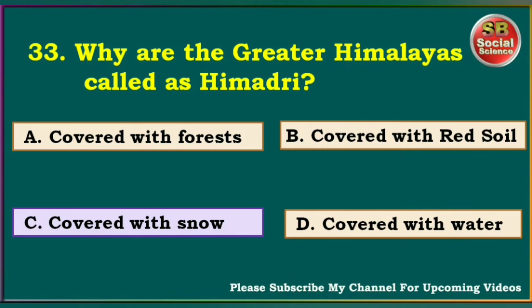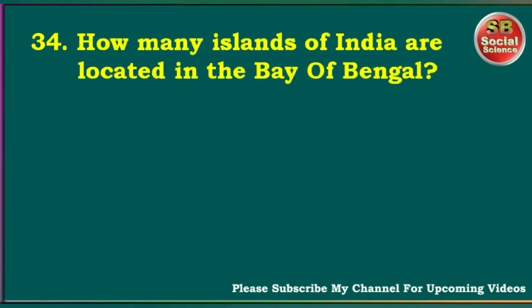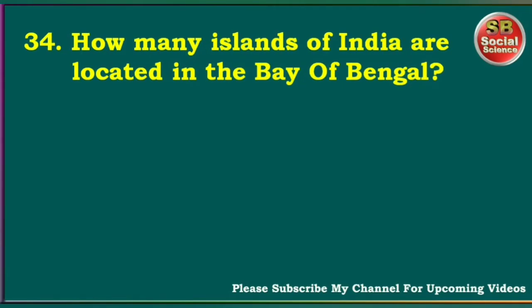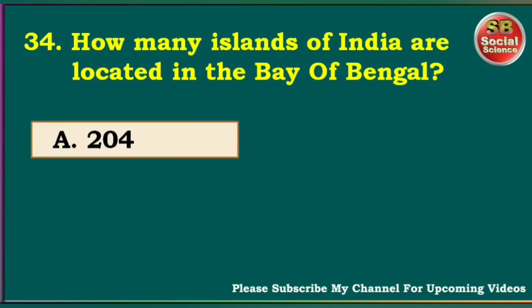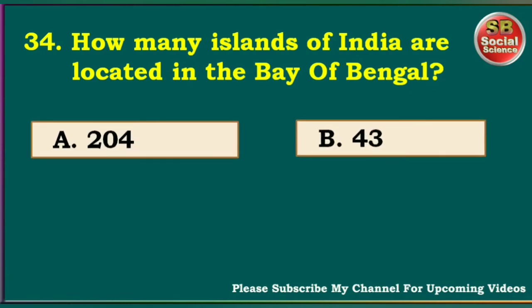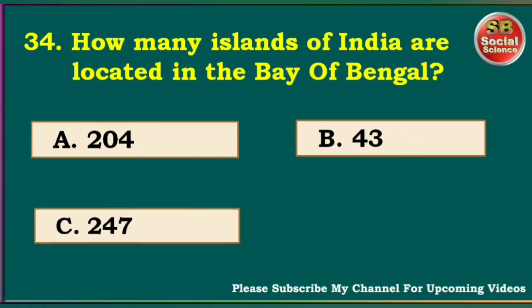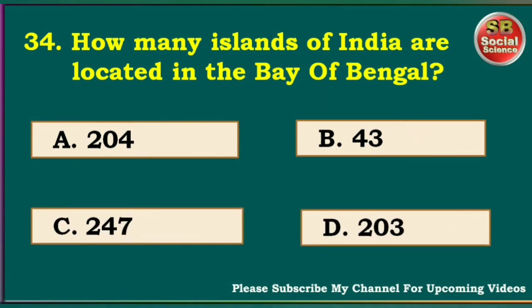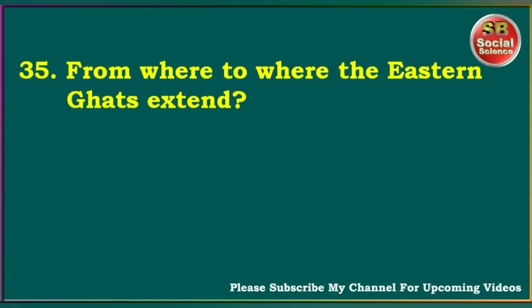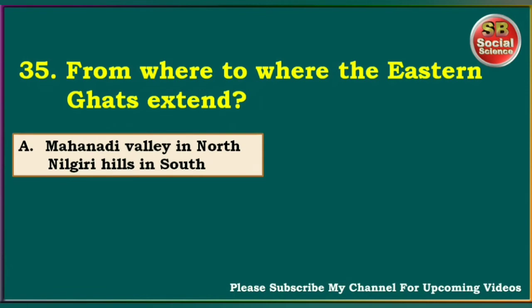How many islands of India are located in the Bay of Bengal? 204, 43, 247, 203. The answer is 204. From where to where does the Eastern Ghats extend? Mahanadi Valley in North to Nilgiri Hills in South, Damodar Valley in North to Nilgiri Hills in South, Narmada River in North, Kosi River in North.